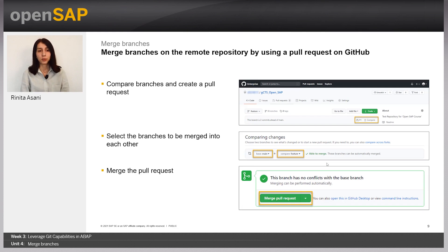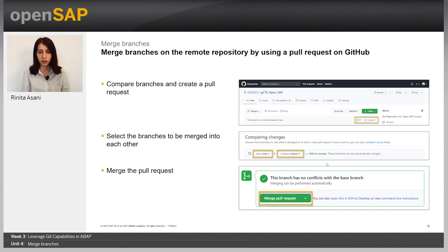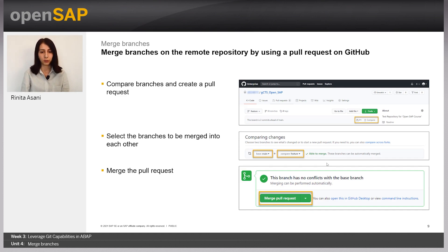How do branches work on the remote repository? There is a 'Compare Branches' button. We compare the branches — for example, the main branch and the feature branch — and we create a pull request. The result of the comparison is that they are able to merge: there is no conflict, and we simply merge the pull request.